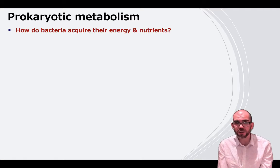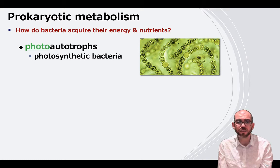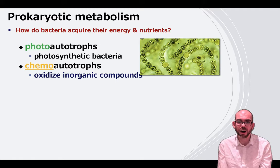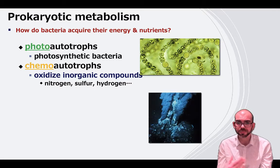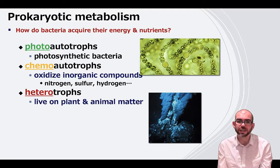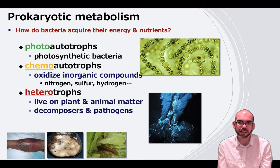Bacteria are not only diverse in their structure but also in their metabolism. Some are photoautotrophic — they're photosynthetic and undergo a photosynthesis-like process to get carbon from the atmosphere. Others are chemoautotrophs, able to directly oxidize inorganic compounds such as nitrogen, sulfur, and hydrogen; these are the kind found in hot springs or underwater vents. And then there are heterotrophic bacteria like you and I — they must consume other organisms or act as decomposers, consuming dead or decaying matter.